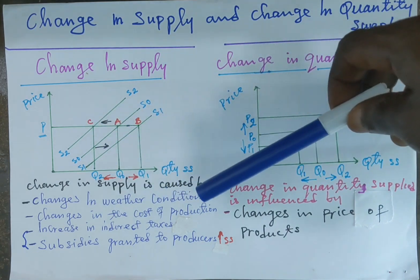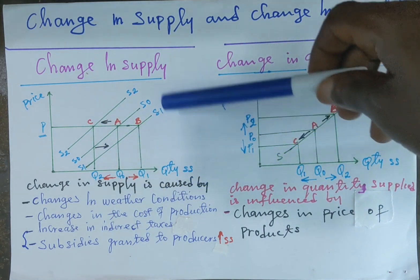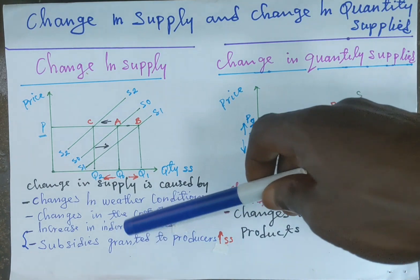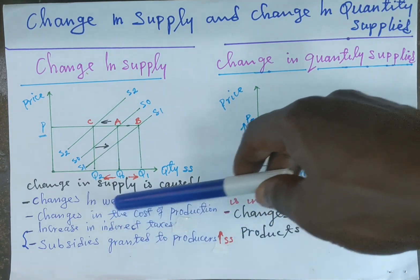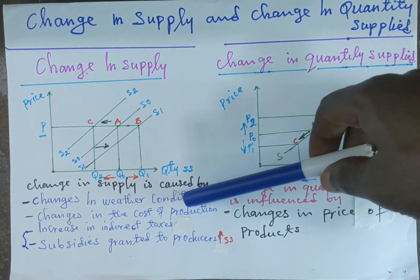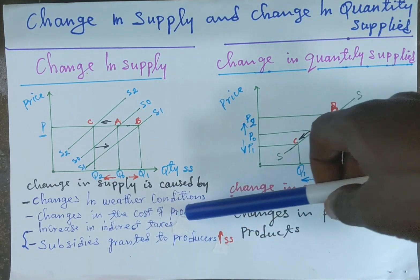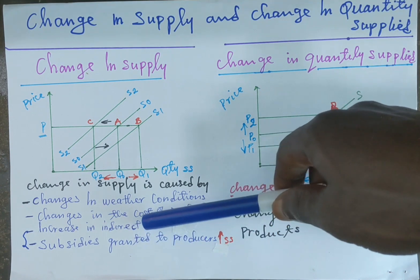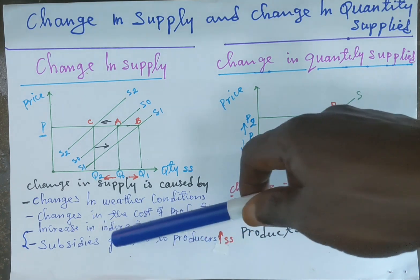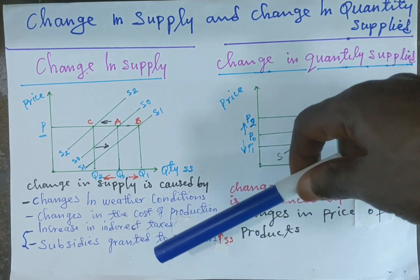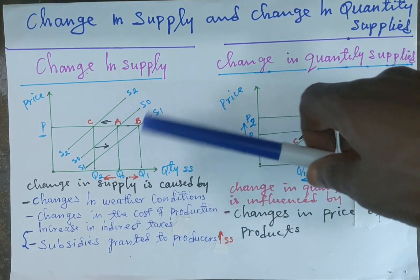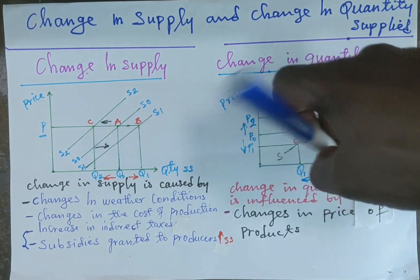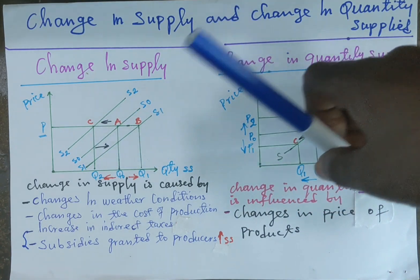This change in supply is caused by factors such as changes in weather conditions, changes in the cost of production, indirect taxes, and expectation of future changes in price. So let's explain using this graph or diagram.